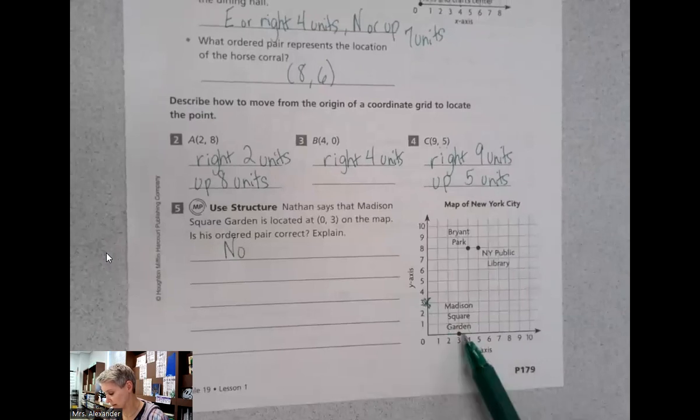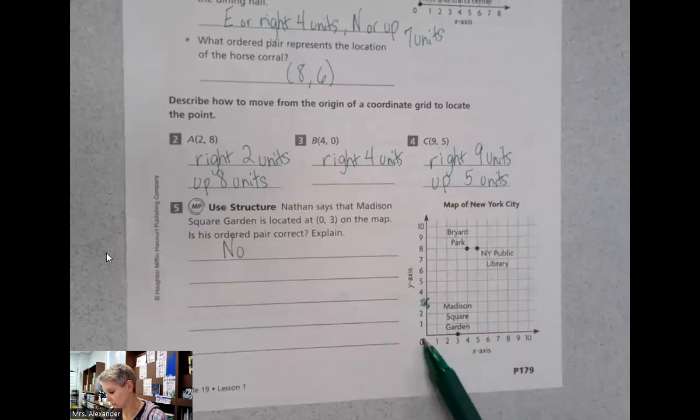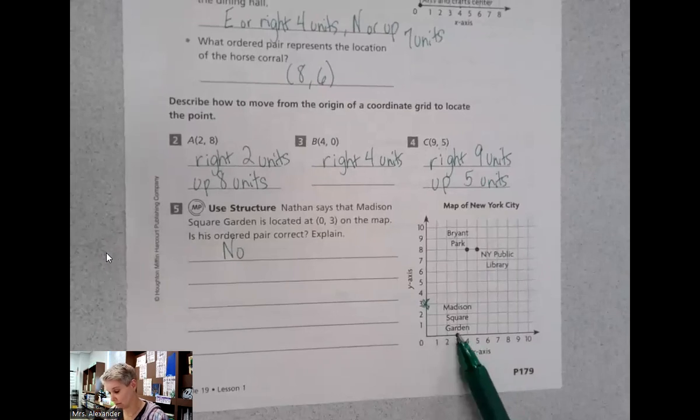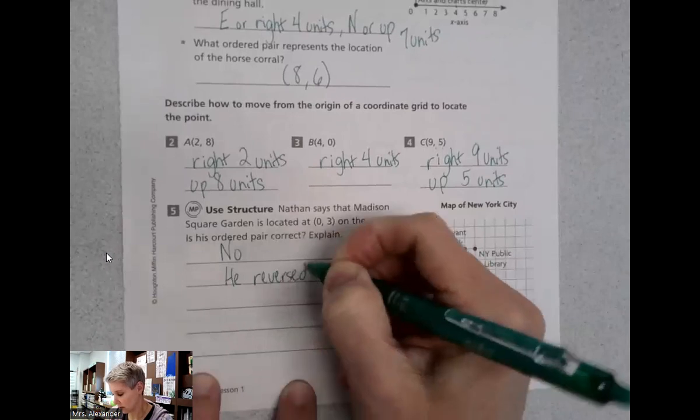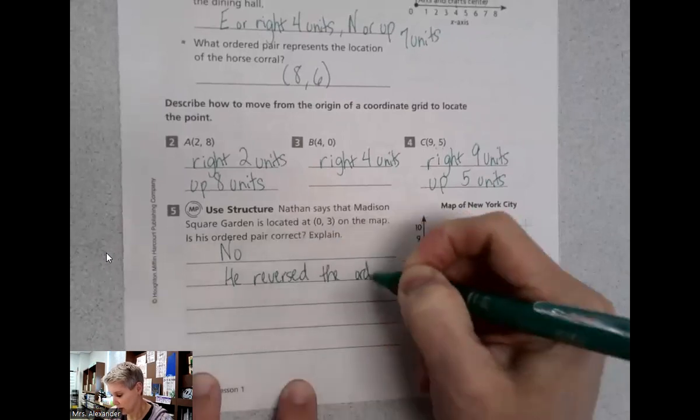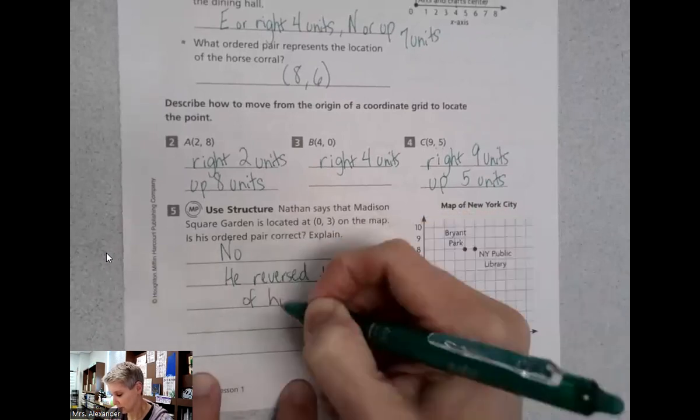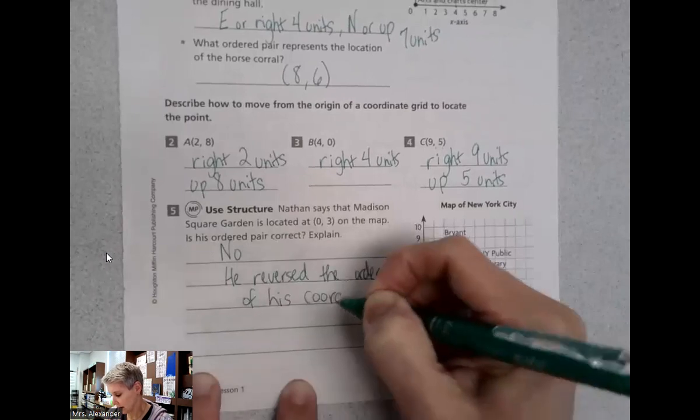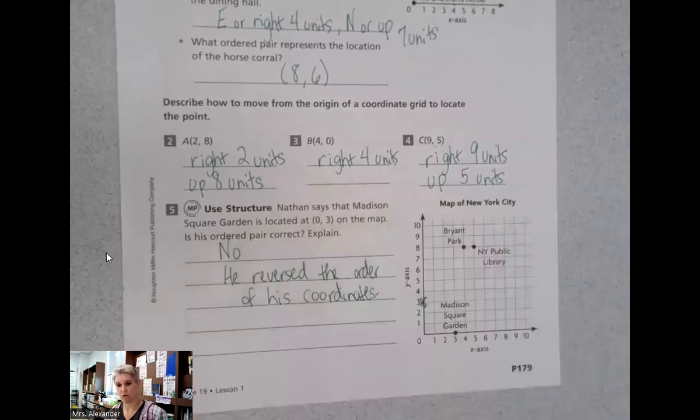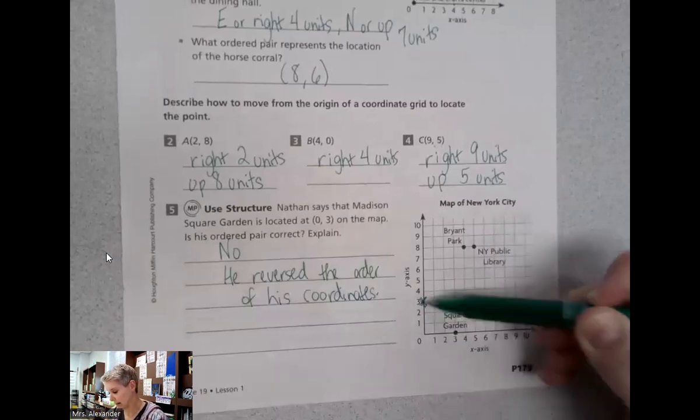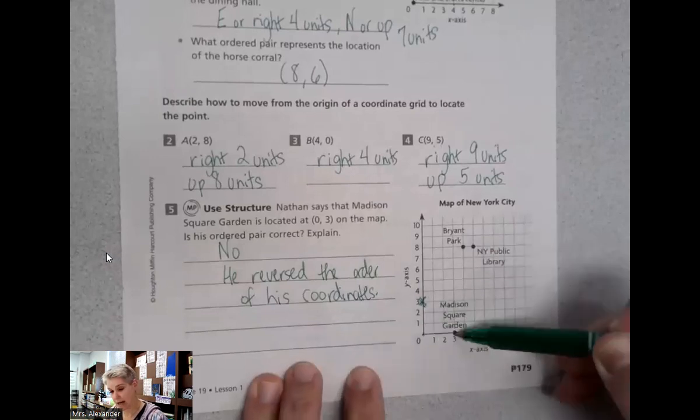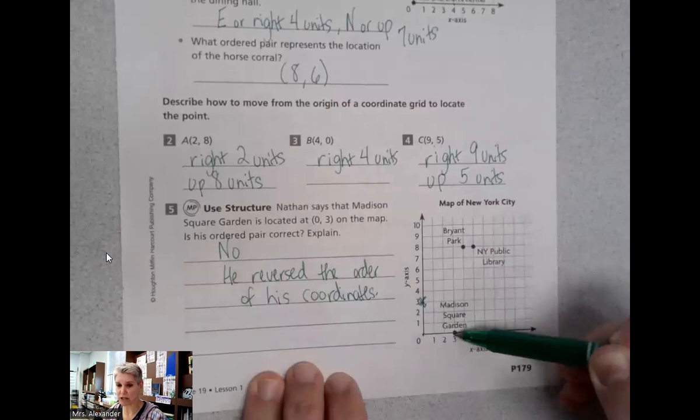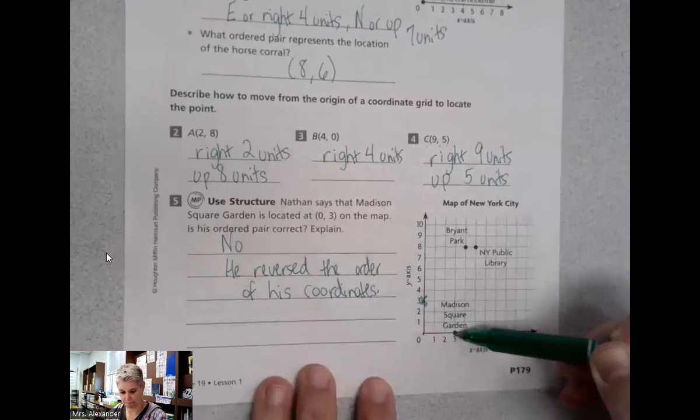The answer would be no, he is not correct. He said (0,3). Look where Madison Square Garden is. It's at (3,0). So he reversed or he changed the order of his coordinates. Remember we're going over then up. So you see how that gets us to the wrong spot. If we did over zero up three, or over three up zero, it totally changes where we are on our map.